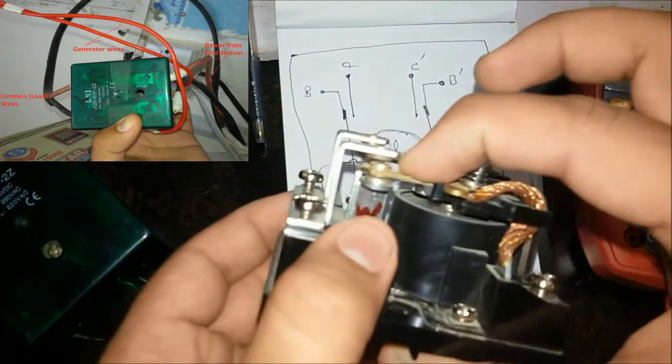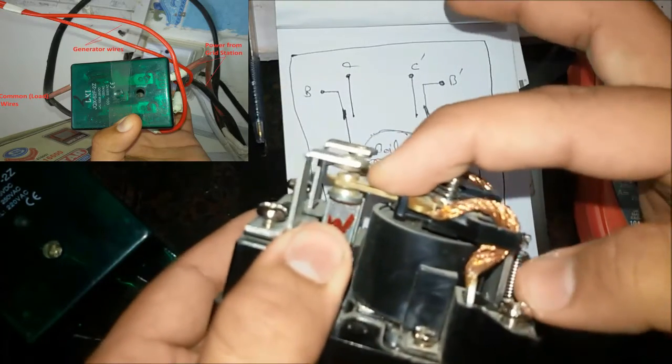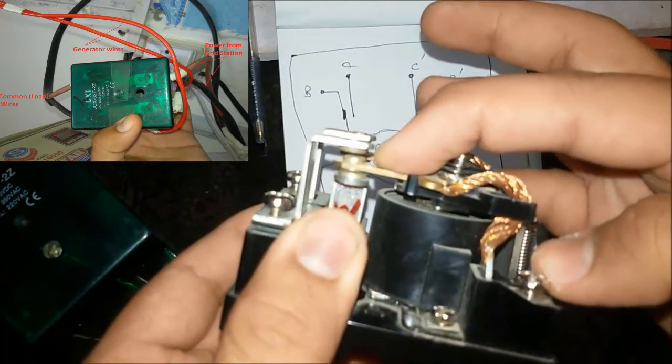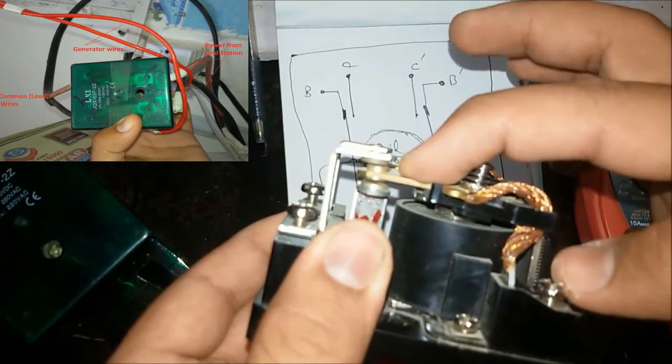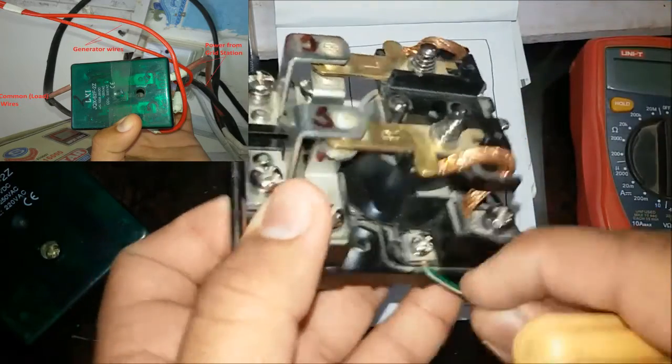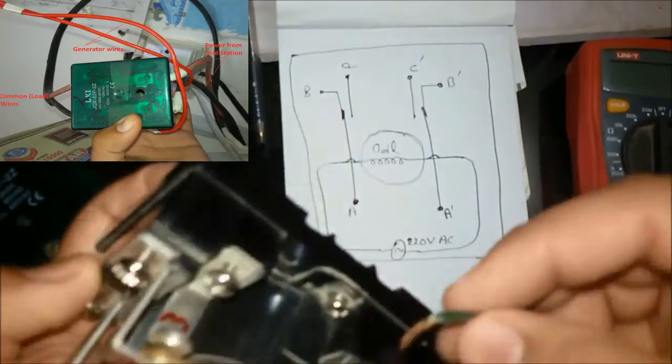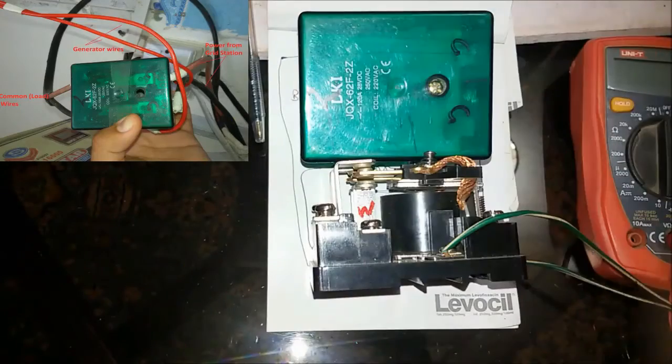Now come to the connection. First connect the load wire to the common pins of the AC relay. After that connect the generator wire to the normally open pins of the relay. Connect one wire to one pole normally open terminal and the other wire to the other pole normally open terminal.